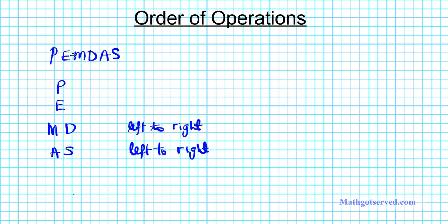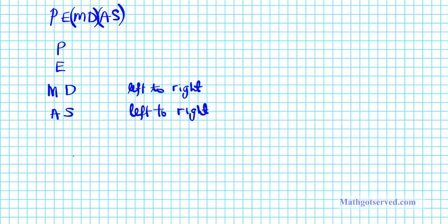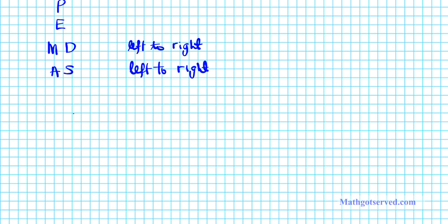So please excuse my dear Aunt Sally. Multiplication and division are in the same group — from left to right, whichever comes first. Addition and subtraction are in the same group — whichever one comes first from left to right. That's basically what the order of operations is. Let's take a look at some examples.